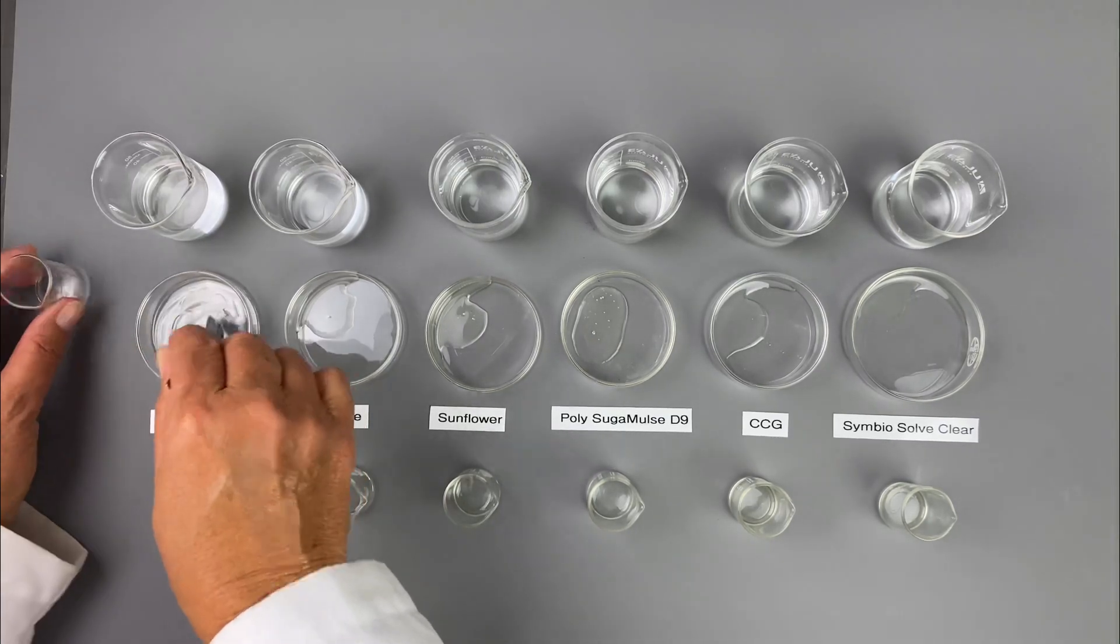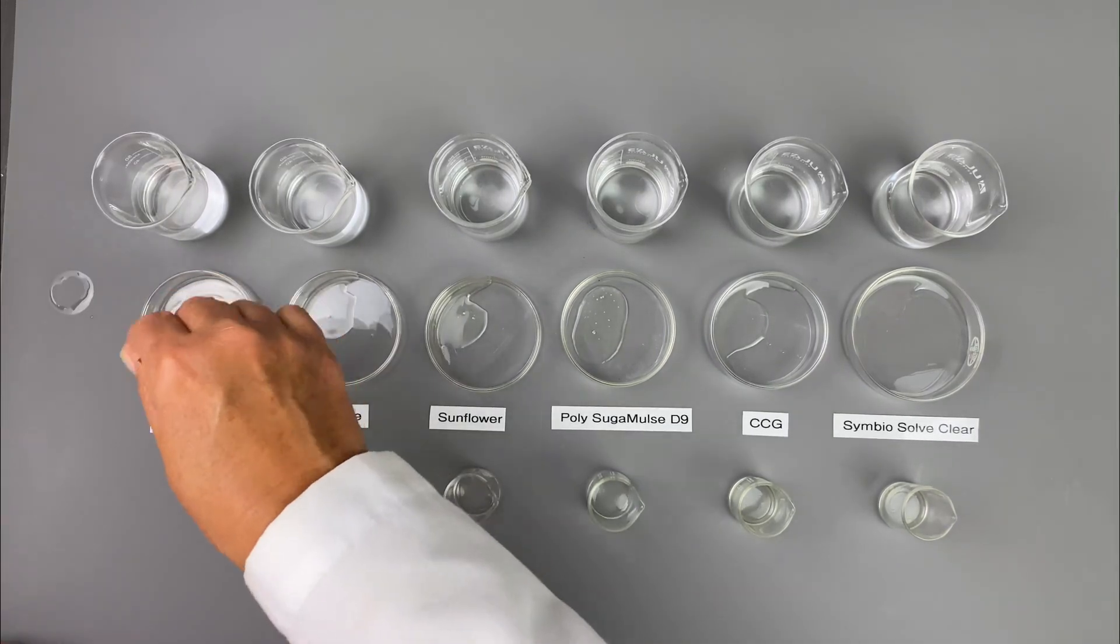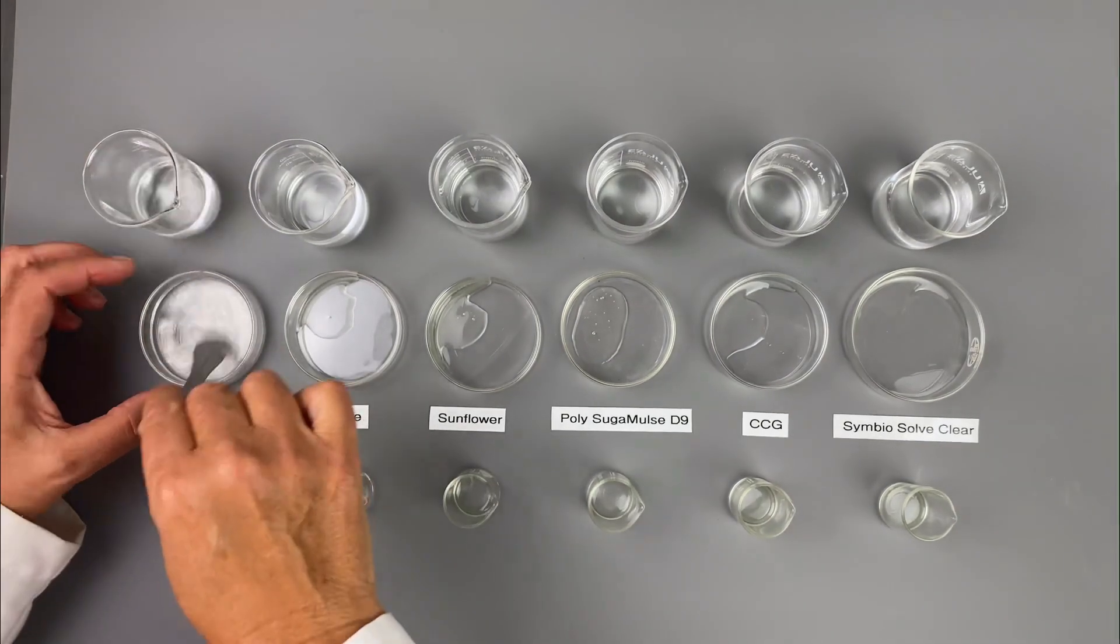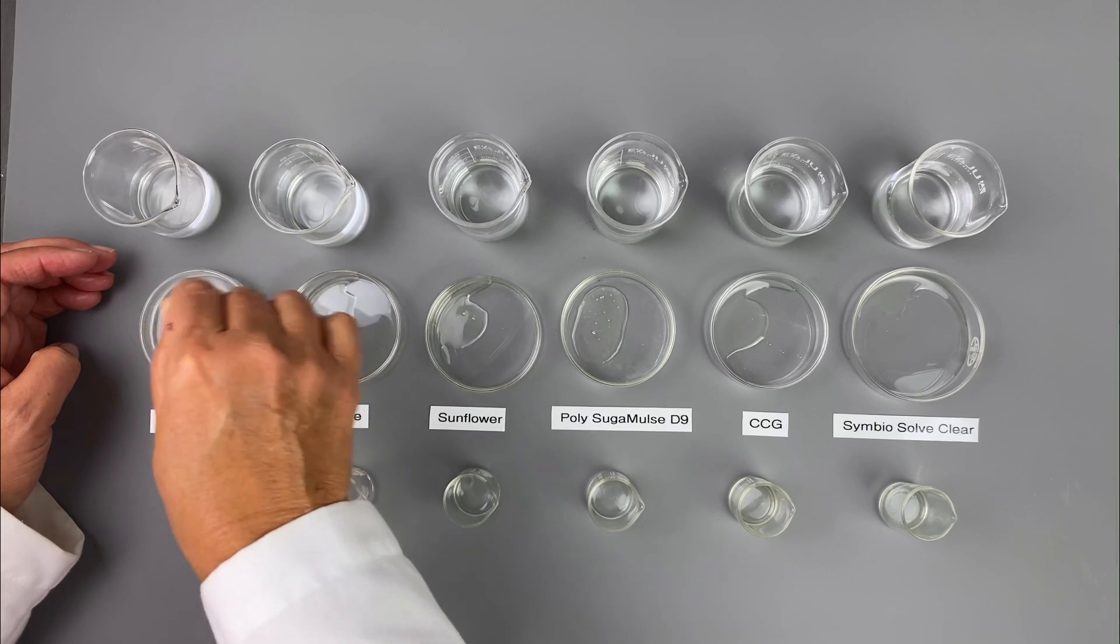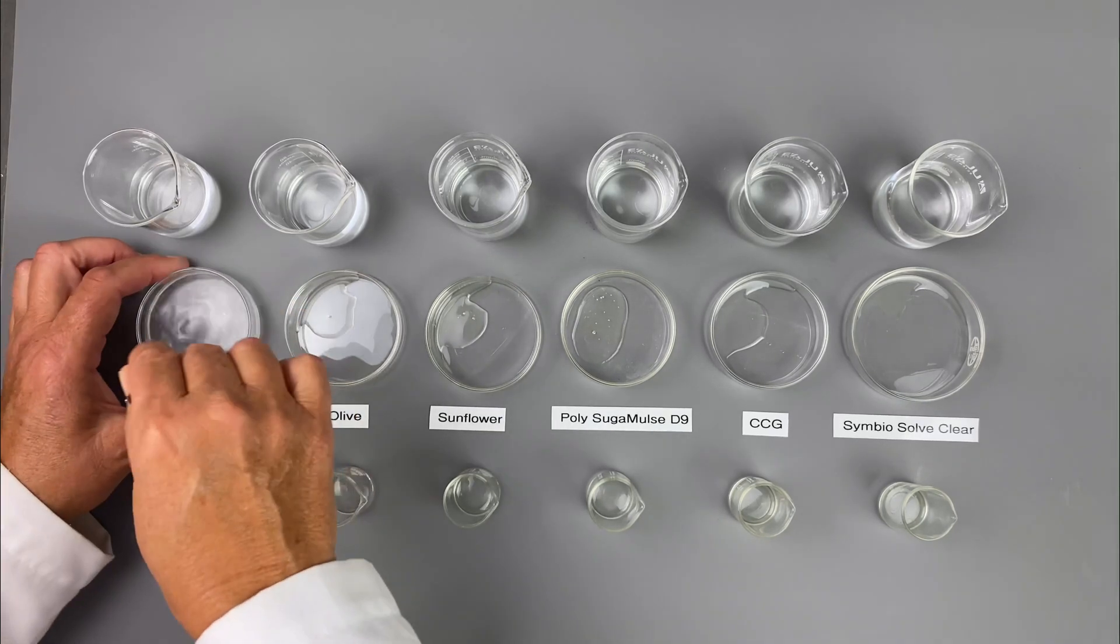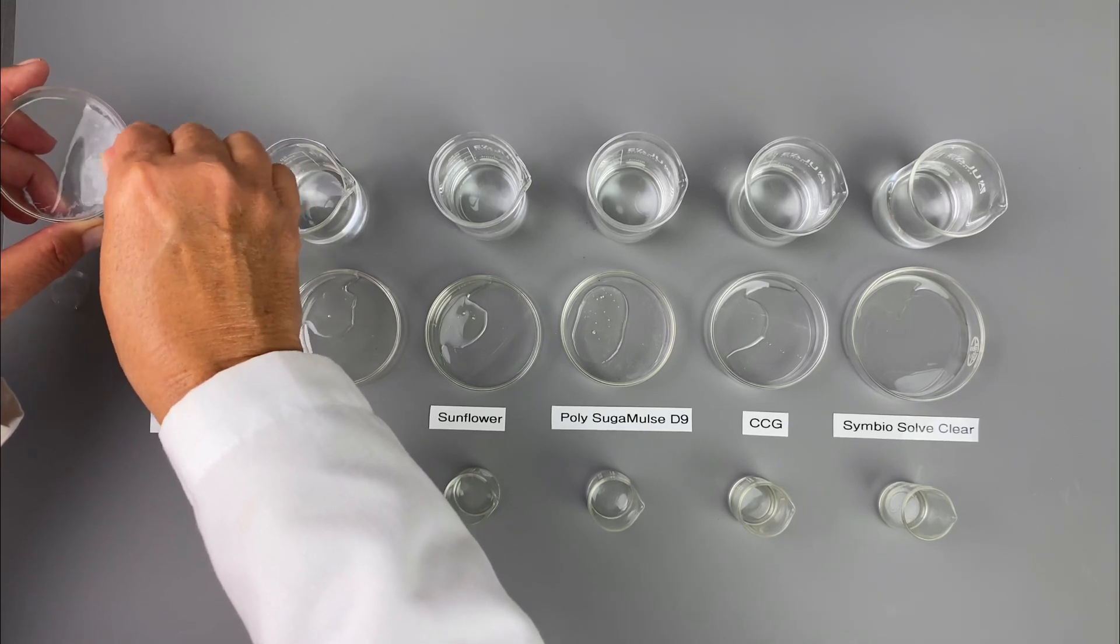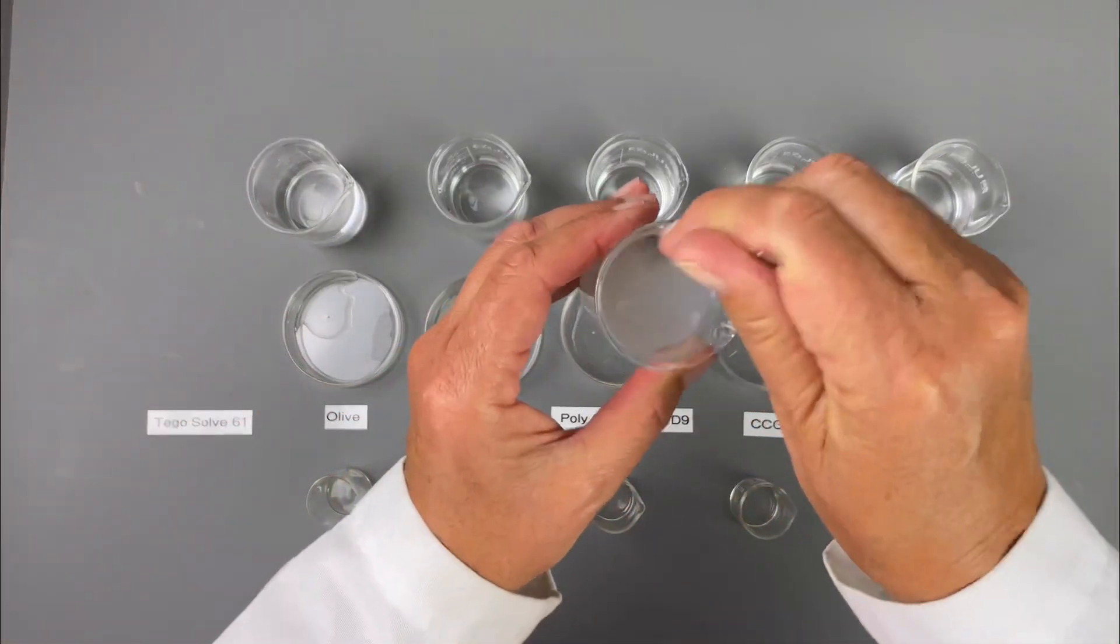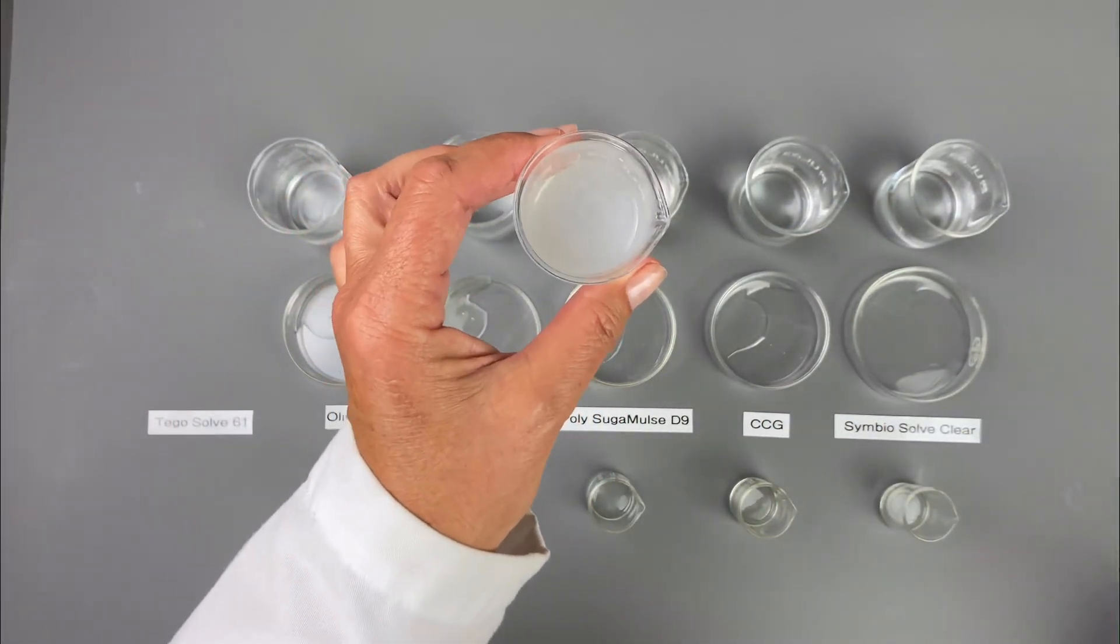The general mixing technique is to slowly incorporate the essential oil into the solubilizer. Every essential oil or fragrance will be different and you'll have to test it to see how it solubilizes. So then I'm going to add the water because it's just easier and that way I can slowly mix it. And you want to allow this to settle. It takes time to settle.